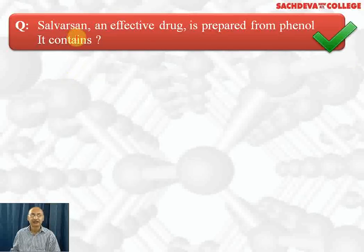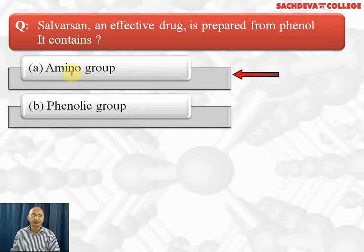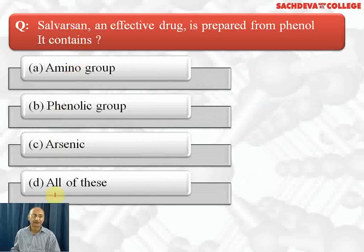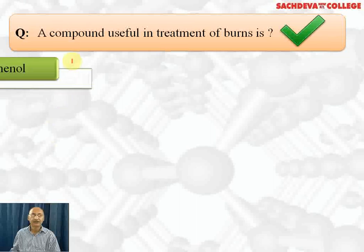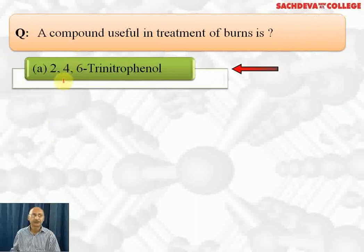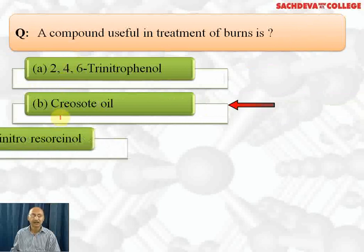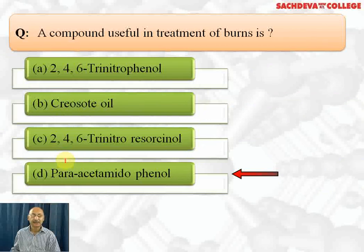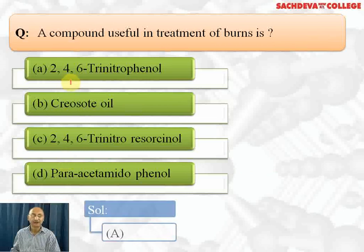Next question: Salvarsan, an effective drug prepared from phenol — what does it contain? Options are amino group, phenolic group, arsenic, or all of these. The correct answer is all of these; Salvarsan contains all of those groups. Next question: a compound useful in the treatment of burns is which of the following — 2,4,6-trinitrophenol, creosote oil, or para-acetamidophenol? The correct answer is 2,4,6-trinitrophenol, popularly called picric acid, which is used for the treatment of burns. Para-acetamidophenol (paracetamol) is used as an antipyretic.